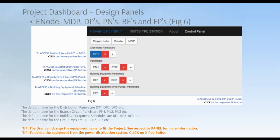Now let's go back to setting up the project at its start. Once you have the panel set up on your dashboard, you can access each panel by clicking on its button: Project Info, E-Node, MDP, DP, PN, BE, or FP. Once the panel is open, just work away.